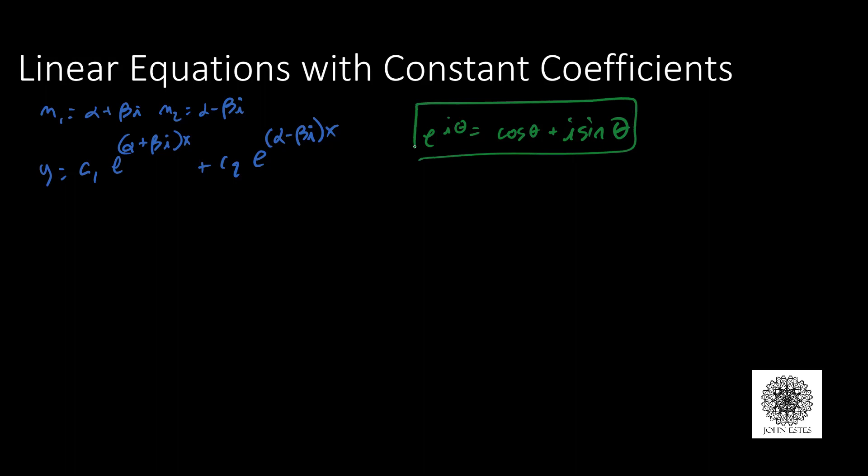With that in mind, e to the i beta x is actually cosine beta x plus i sine beta x, and e to the negative i beta x is cosine beta x plus i sine of negative beta x. From the negative angle identities of trigonometry, cosine of a negative angle is the same as cosine beta x, and for sine it's minus i sine beta x.